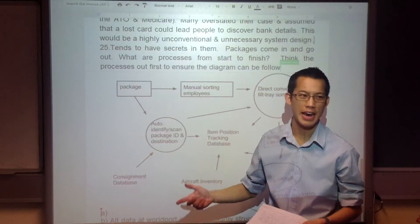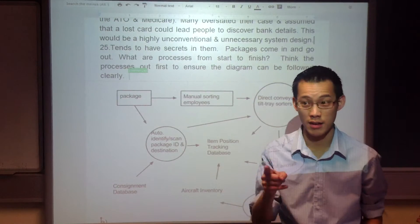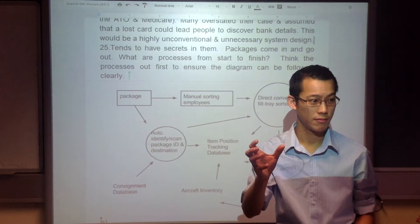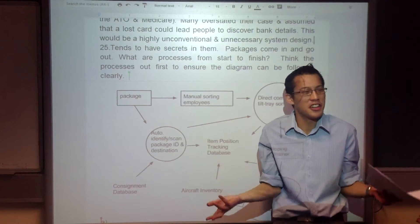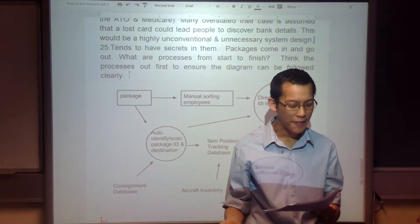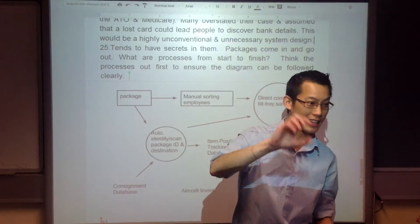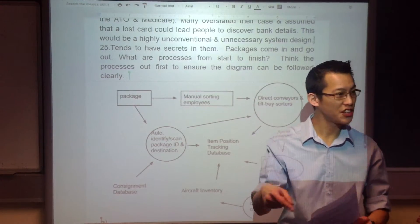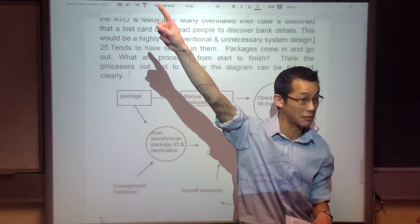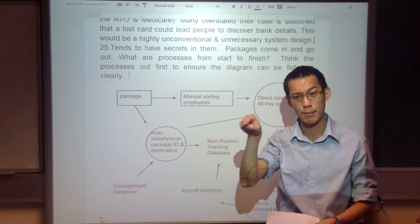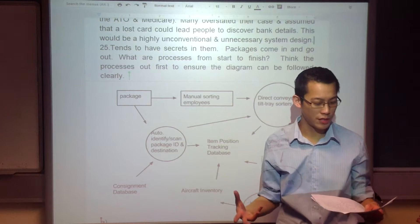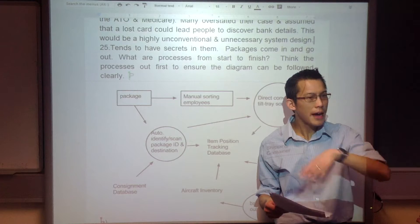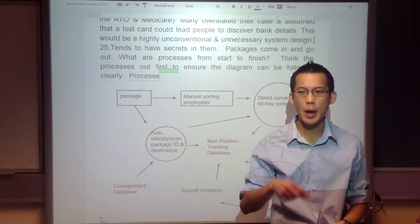Here are my three processes, and I shape everything around those. Number one — what's the very first thing that happens? The package arrives. What's the first process? There's a camera involved. Label scanned. They have these things called smart labels. You didn't need to know what they were, but there was an automatic identification of the package. The label gets scanned and you find out its destination. The destination is crucial — it's how Worldport knows where to send the package. So process number one: the package label gets identified.